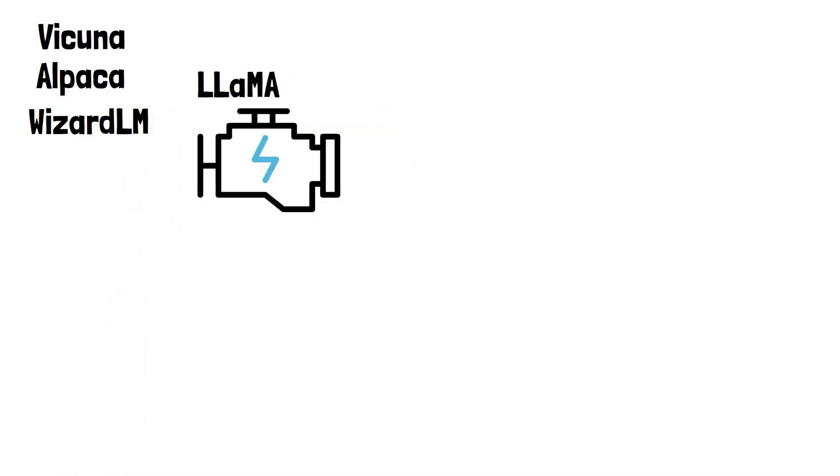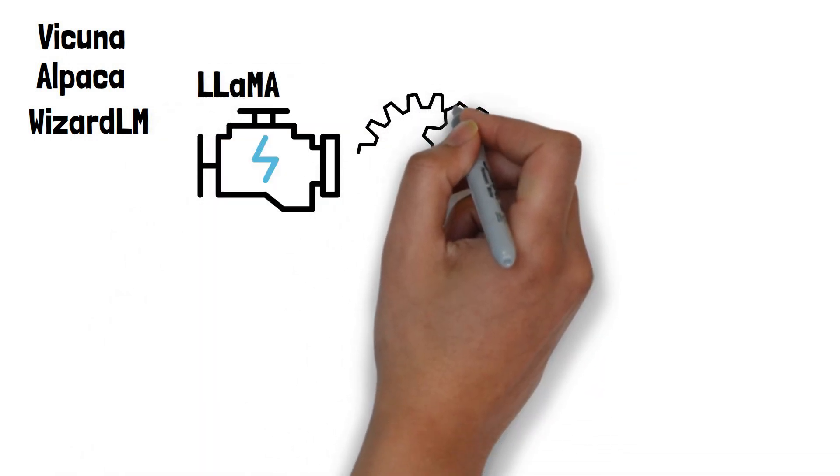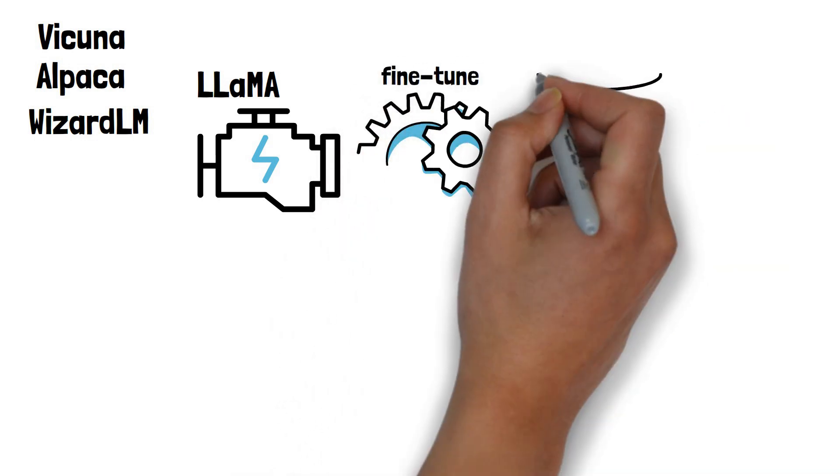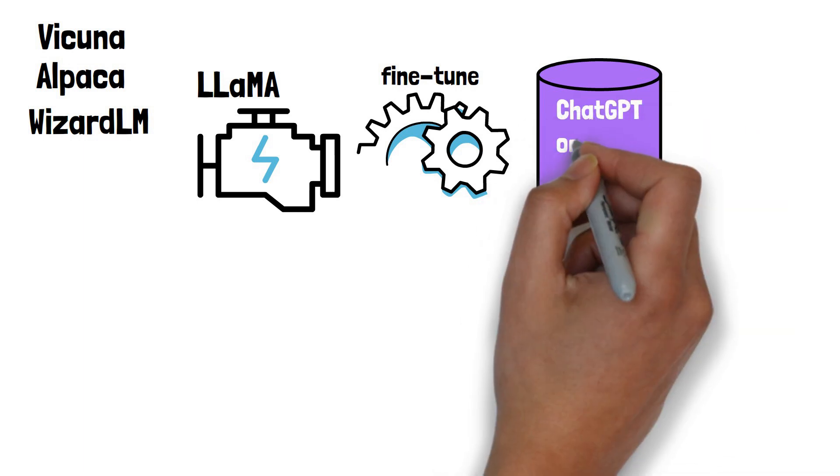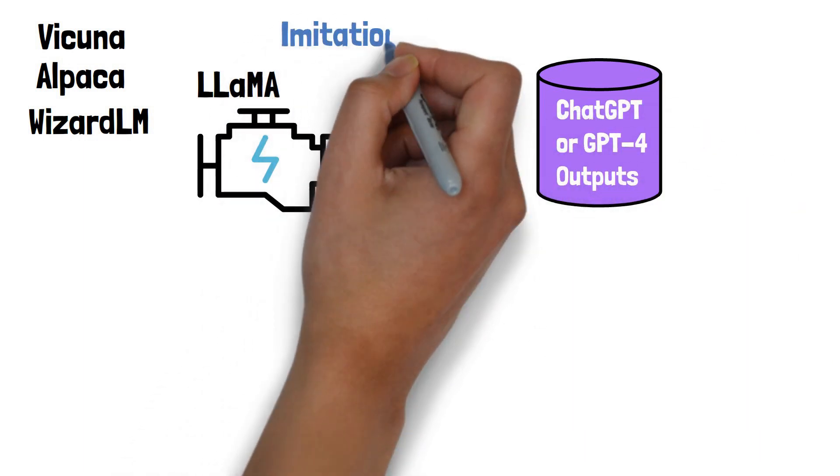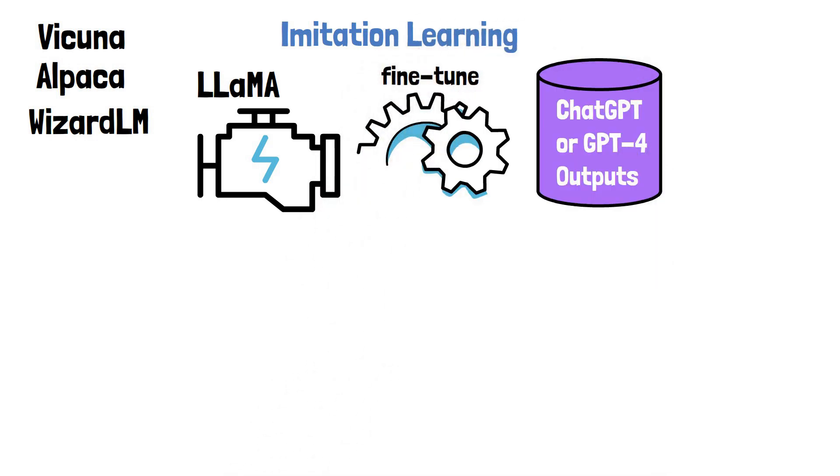which is much smaller than ChatGPT or GPT-4 and enhance the base model capability by fine-tuning it on a dataset that was created using responses from ChatGPT or GPT-4. This process of learning from the outputs of a different model is called imitation learning.